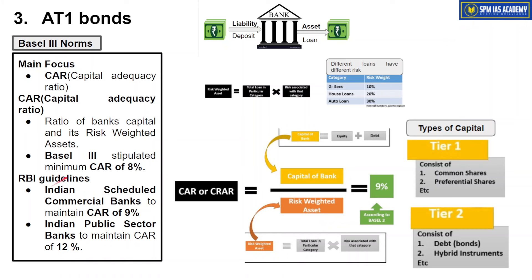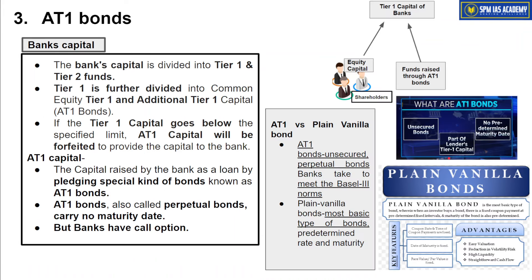RBI has recently directed that these capital adequacy targets must be met by April 2024. Regarding Tier 1 capital: it is mainly in the form of equity capital raised from shareholders. But Tier 1 capital also includes capital raised through AT1 bonds. AT1 bonds are special bonds. Normal bonds — called plain vanilla bonds — have three features: loan amount, interest rate, and maturity period.